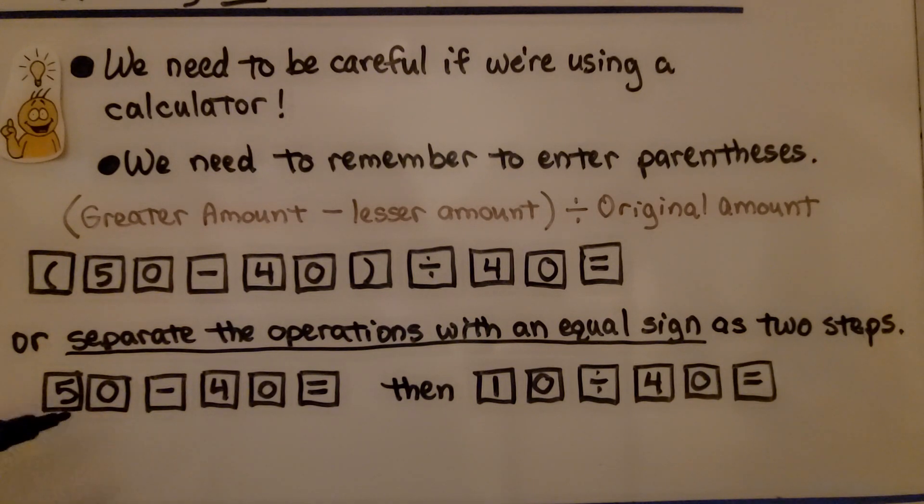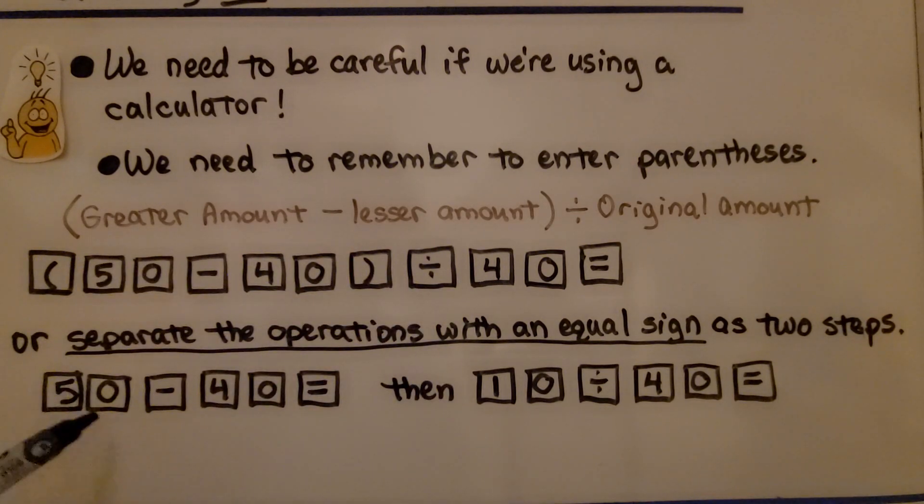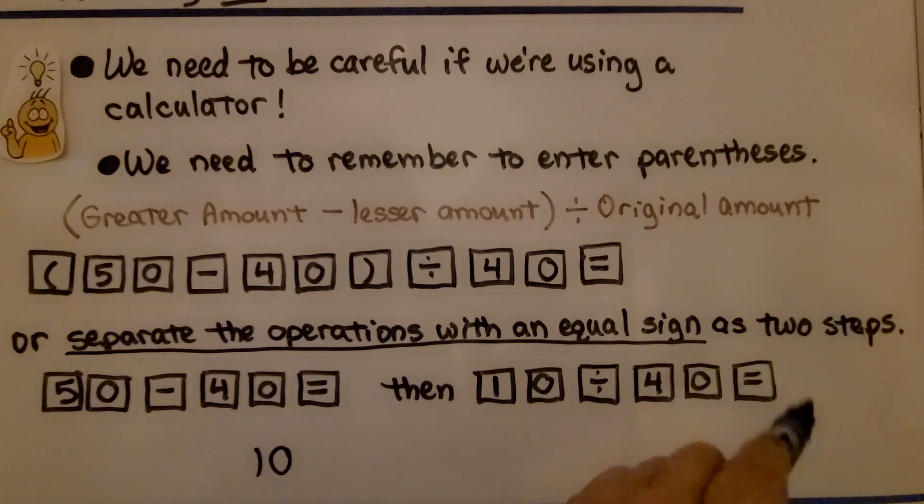We could also separate the operations with an equal sign and do this as two steps. We could do 50 minus 40 is equal, and then we would get our 10, and then do 10 divided by 40, and we would get our 0.25 for 25%.